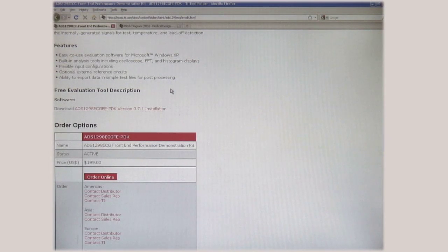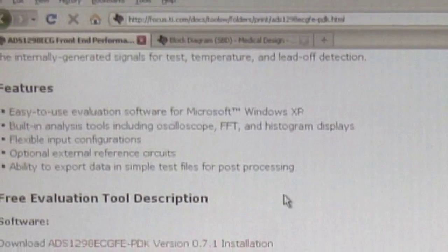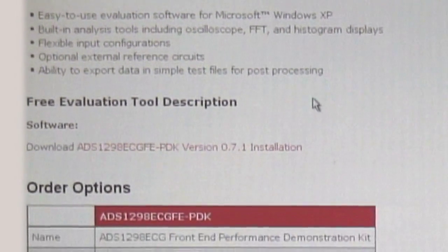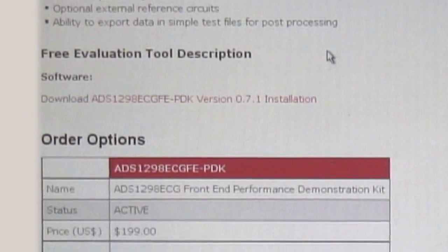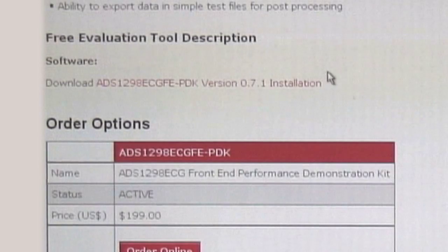The best way to obtain the software is by downloading it from the PDK product folder. Use the URL shown in this video or just search for ADS1298 at TI.com and you'll find this page. Here you can download and install the software from the link approximately halfway down the page.